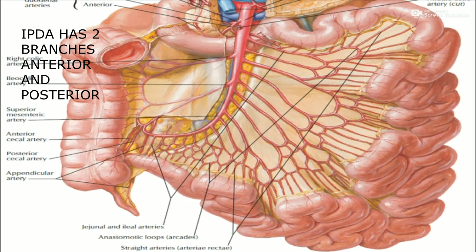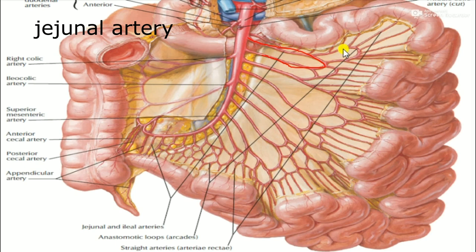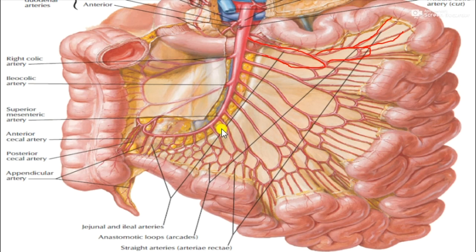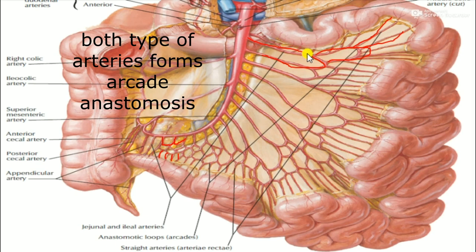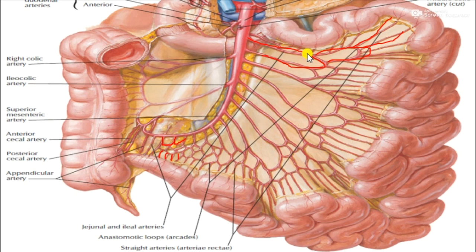The intestinal arteries of the superior mesenteric artery include the jejunal arteries and ileal arteries, each with their straight arteries. Both sets of arteries are dichotomizing arteries that form several lines of arched anastomoses called arcades. The jejunal arteries form three anastomotic lines and the ileal arteries form two.